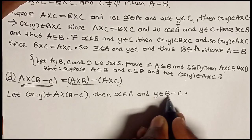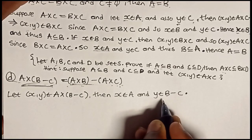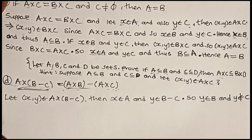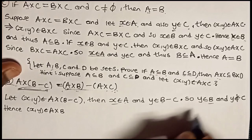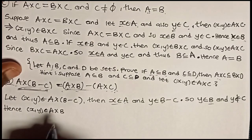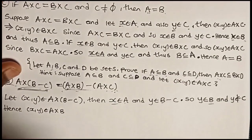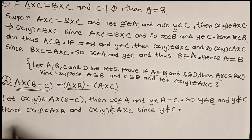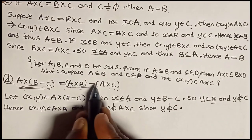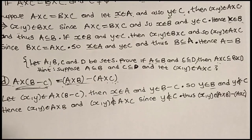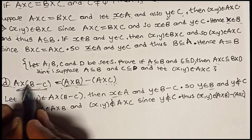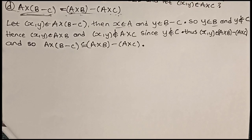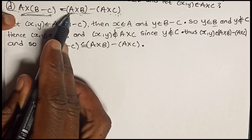Y being in B minus C means Y is in B and Y is not in C. Hence the pair (X, Y) is in A cross B, since X is in A and Y is in B. But the pair (X, Y) will not be in A cross C, since Y is not in C. Therefore the pair (X, Y) is actually in (A cross B) minus (A cross C). So we can say A cross (B minus C) is a subset of (A cross B) minus (A cross C).